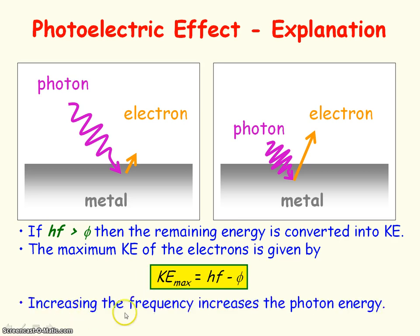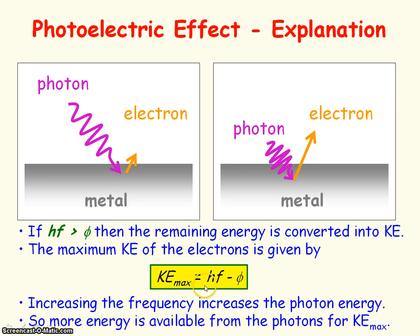This is known as the photoelectric effect equation, and it deals with the conservation of energy: all the energy of the photon is converted to the electron — some of it to release the electron from the metal surface, and the remaining energy converted into kinetic energy. So increasing the frequency increases the photon energy, and since the work function is constant for a given metal, more energy is available as kinetic energy, so the maximum kinetic energy of the electrons increases.